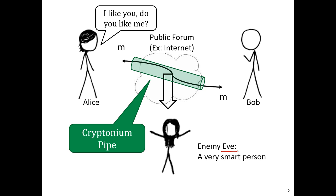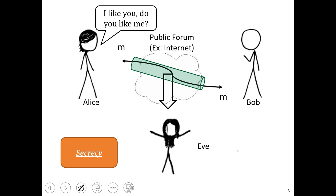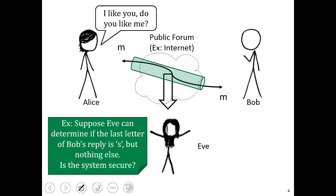So what are some of the security goals of cryptography? Well, the first thing that comes to mind is this notion of secrecy. What secrecy means is if we encrypt the message to create some ciphertext and we pass this ciphertext on the public forum, and Eve intercepts this ciphertext, she can't determine anything about the original message. Is the system secure? Typically we would say no — it's insecure because it provides insufficient secrecy.